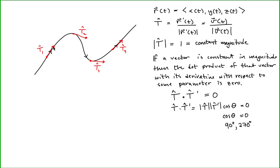So we have a normal vector — that normal vector is the derivative of the unit tangent vector. This normal vector is always normal to the tangent vector at every point along the curve. Now let's define the principal unit normal vector, defined as the derivative of the unit tangent vector divided by the magnitude of the derivative of the unit tangent vector.